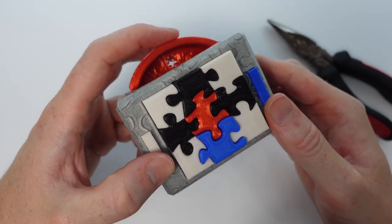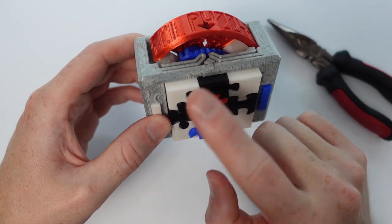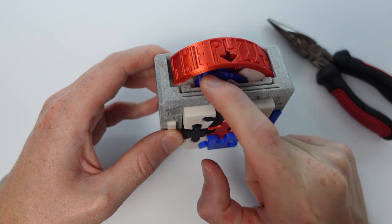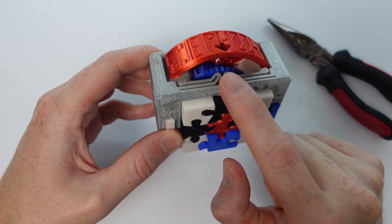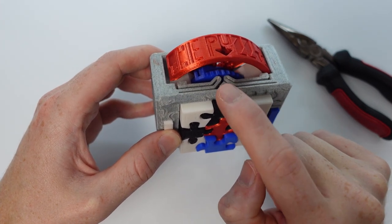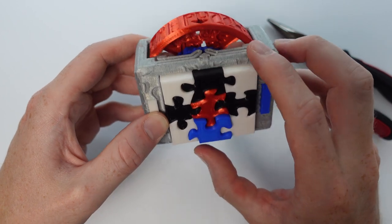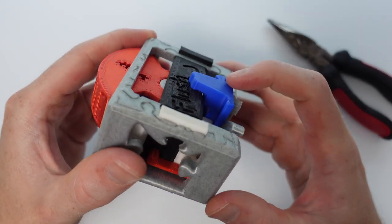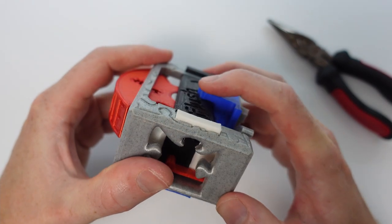Basically you have to align that arrow, this arrow, and this arrow. Once all three arrows are aligned, you'll be allowed to push this back piece flush.